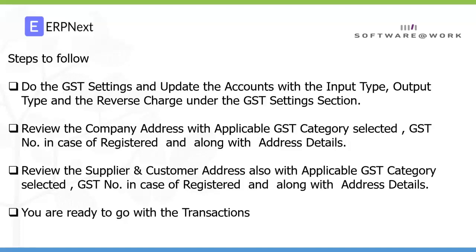We also need to review that the company address is filled up with the applicable GST category, GST number in case of registered entities, and other address details. Similarly, supplier and customer masters should also have addresses updated with the applicable GST category, GST number for registered dealers, and full address details. Once all this is done, you are ready to proceed with transactions.